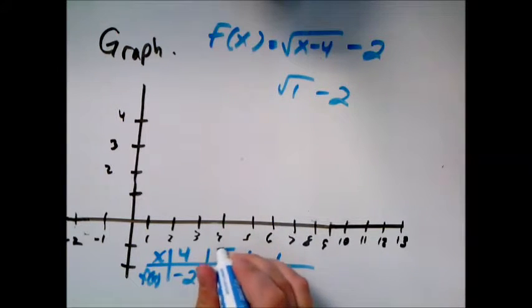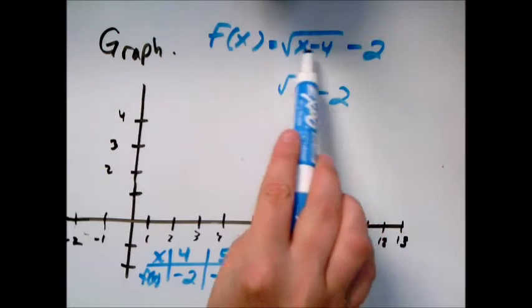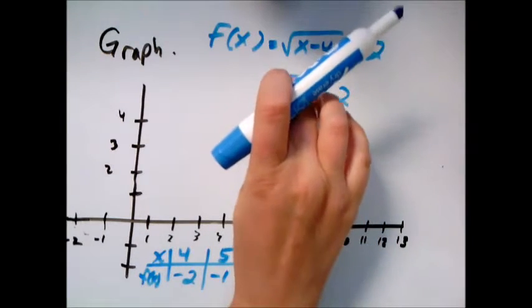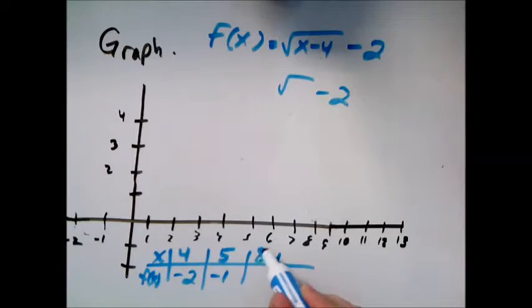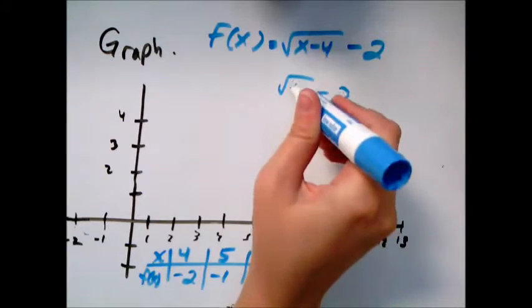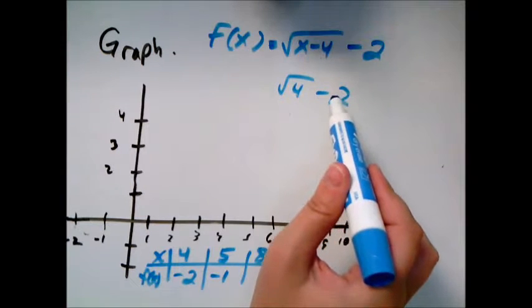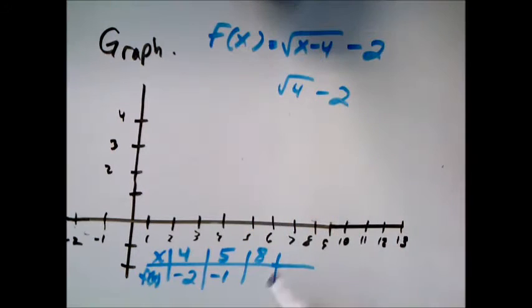Then I could do 6, but notice I have square root of 2 which won't work out nicely. 7 will give me square root of 3, but maybe 8 for x will give me 8 minus 4, so square root of 4, and square root of 4 minus 2 is 2 minus 2, so 0.